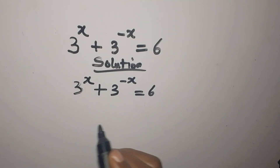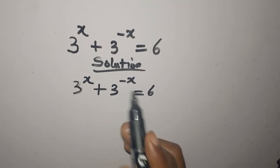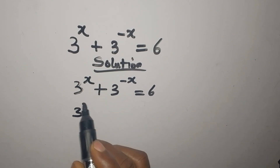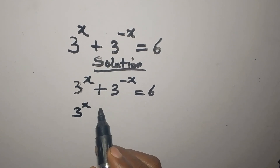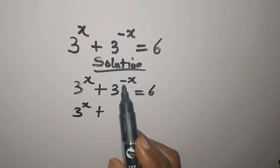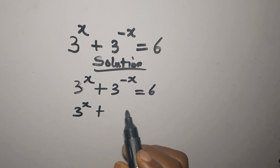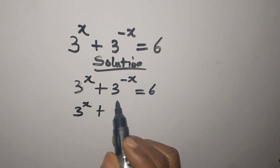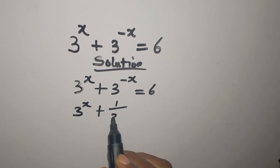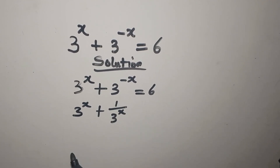Let's work on this. We have 3 to the power of X, and because of the negative exponent, we are going to have 1 over 3 to the power of X — so the negative is no longer there.